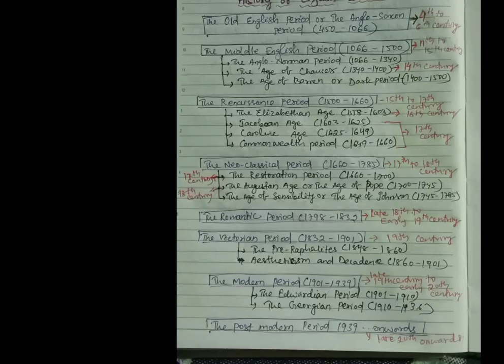Then the Modern period. It started in 1901 and ended in 1939. It comes under late 19th century to early 20th century. And this period also has two ages.